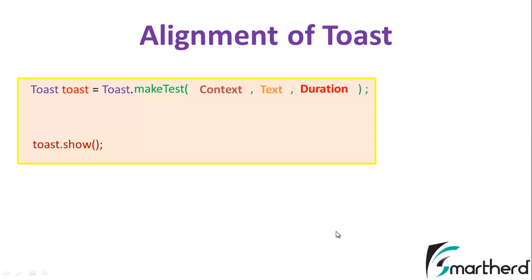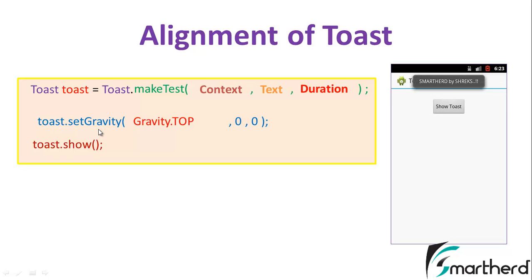Now, what if you want the Toast message at the top of the screen? For that we are having the function toast.setGravity and inside the setGravity function we are having three parameters. The first parameter specifies at which area you want the Toast message. Here I am using Gravity.TOP. So it is printing the Toast message at the top of the screen.